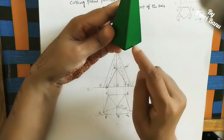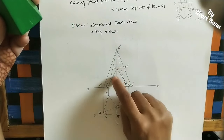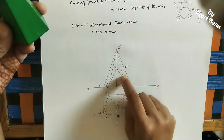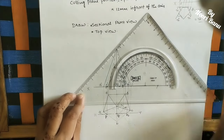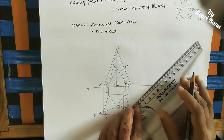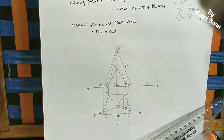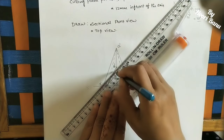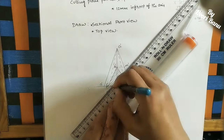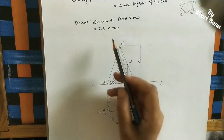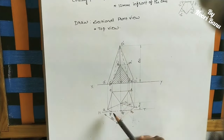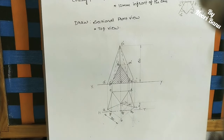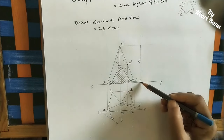Join p' to q' and q' to r'. We get the hashed section — a triangular shape. Make this area into hatching: take 45-degree lines using a set square. This gives the sectional front view. The top view shows the remaining part. Make the cut-away part in light color since we are removing it. Mark the given dimensions: side length 30 mm, cutting plane 12 mm from axis, and height of pyramid 60 mm.